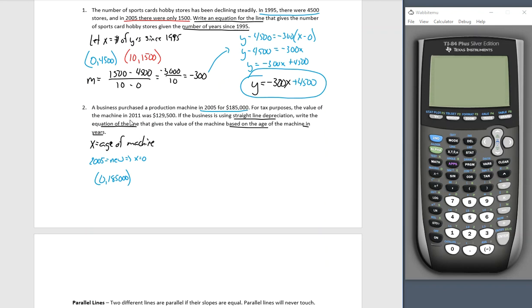For tax purposes, the value in 2011 was 129,500. So 2011 minus 2005 tells me that the machine was six years old. So after six years, it was worth 129,500. Now I decided to throw this in kind of a small space here. So we're going to use our notice method. Always we have to find the slope.